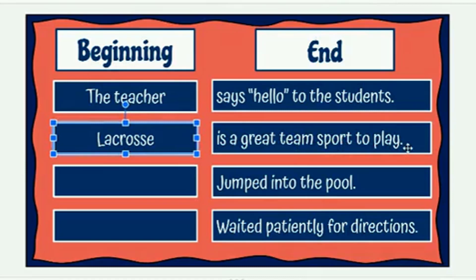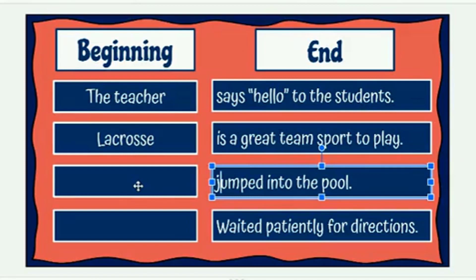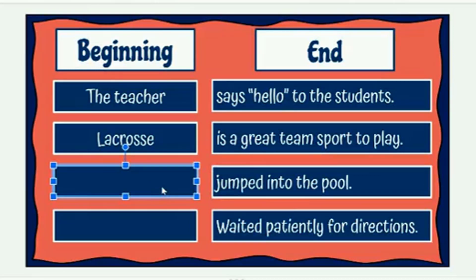I really like that sentence — lacrosse is a great team sport to play. The next sentence seems to be missing a beginning, but it does have an end: 'jumped into the pool.' We know that by itself it can't be a whole sentence, so I'm going to give 'jumped' a lowercase letter. The beginning needs to tell us who or what the sentence is about. Let's think about who or what might jump into the pool — I'll give you a minute to try it on your own. I'm going to put: 'My dog jumped into the pool.' That makes it a complete sentence.